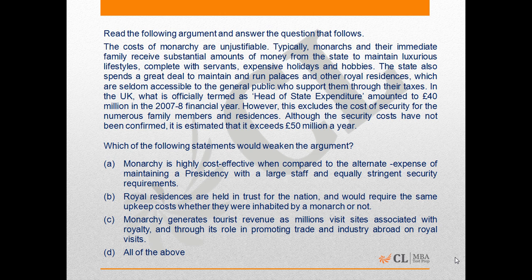Option C: Monarchy generates tourist revenue as millions visit sites associated with royalty and through its role in promoting trade and industry abroad on royal visits. This option also weakens the argument because even though it agrees that there are costs related to a monarchy, it says that the monarchy generates corresponding revenue also, which may not be there in other forms of government. So all three options A, B, and C weaken the argument, and hence the correct answer to this question is D, all of the above.